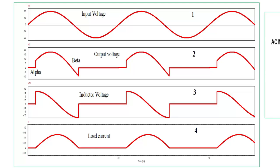Looking at the current, you can see the load current: as soon as the thyristor is on, load current will start increasing. Now this load current will lag the supply voltage by a certain angle, as we know in case of inductive load current is lagging the supply voltage. So when input voltage achieves its peak value, the inductor current or load current is still less than its maximum value. After achieving maximum current, inductor current will decrease because the input voltage is decreasing. When input voltage is zero, still some current is there, and it will become zero at angle beta.